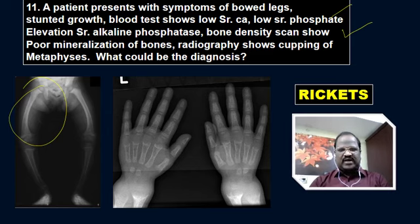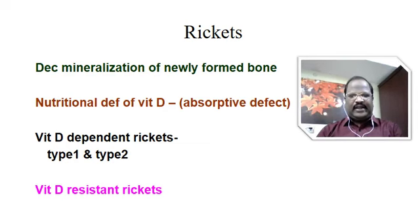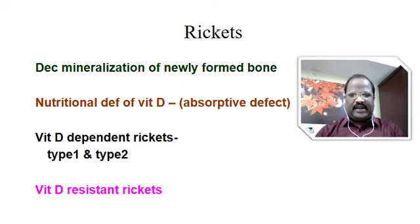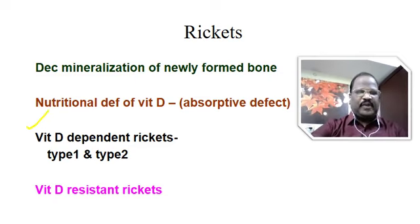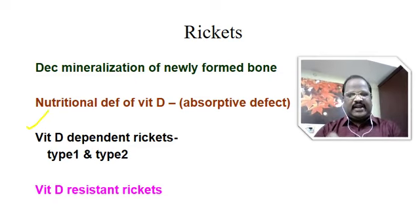Now for some extra points on management of rickets: rickets is mainly due to deficiency of vitamin D and calcium. Normally for treatment of rickets, we supplement vitamin D and calcium. But you should also know about vitamin D-dependent rickets and vitamin D-resistant rickets. Vitamin D-dependent rickets has two types: type 1 and type 2.